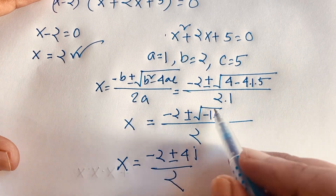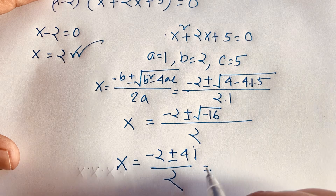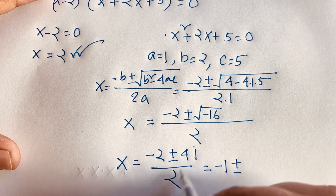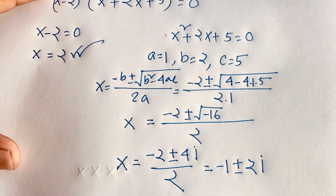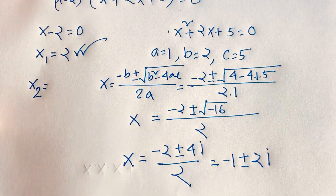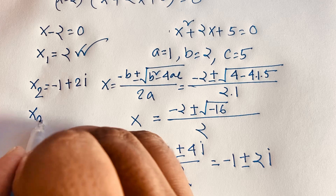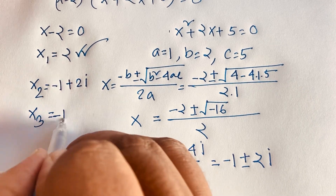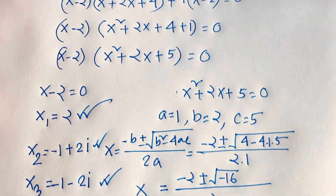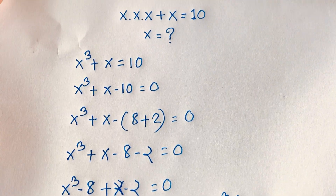Then x equals minus 2 plus or minus 4i over 2, because the square root of minus 16 is 4i, since the square root of minus 1 is i. So we'll find out x equals minus 1, because 2 divided by 2 is 1, plus or minus 2i. So x₁ is equal to 2, x₂ is minus 1 plus 2i, and x₃ is minus 1 minus 2i. This is our final answer in this Math Olympiad question. Thank you all — if you enjoyed this video, please subscribe to my channel for other interesting videos. Goodbye, take care.